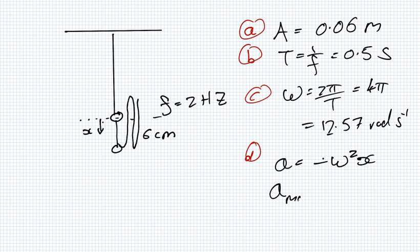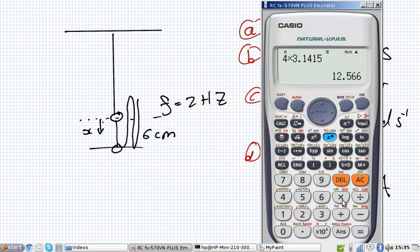So A_max will be ω² which doesn't change, but the X changes. To make the A biggest then we need to make the X biggest, and X is biggest at the end which is the amplitude. So it's going to be our previous answer squared times the amplitude. So that's 9.47 meters per second squared.